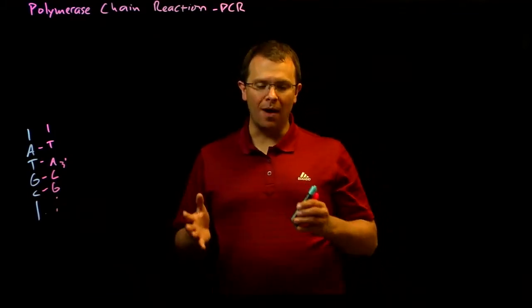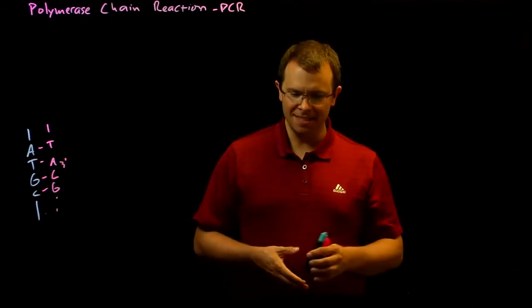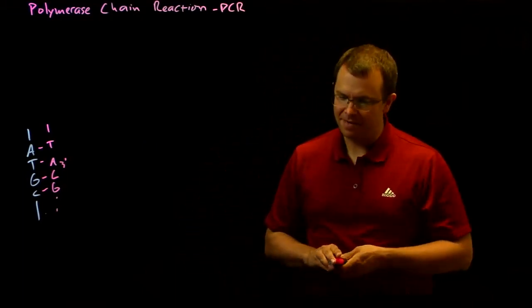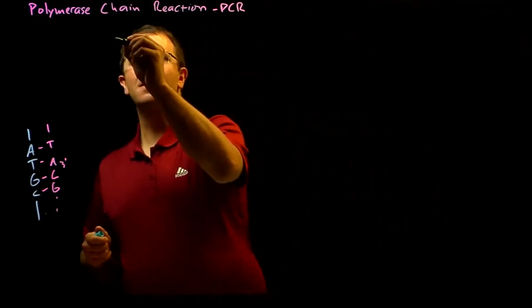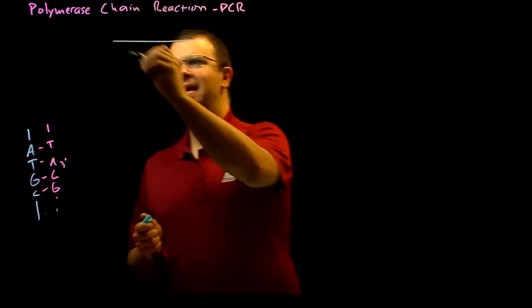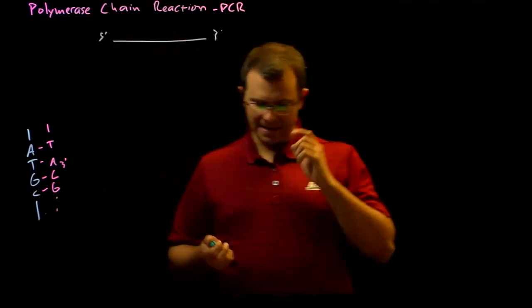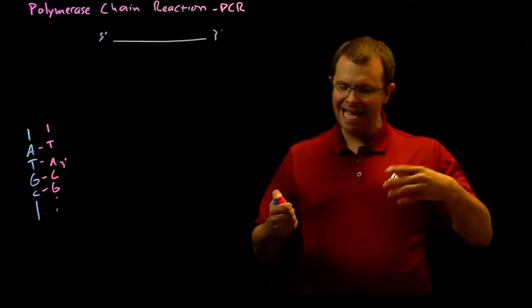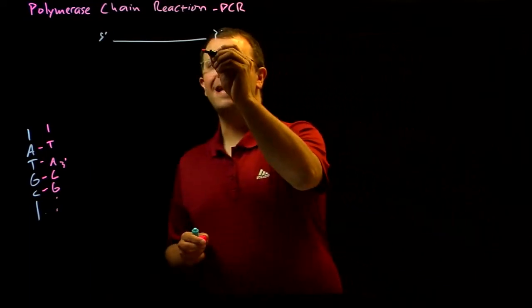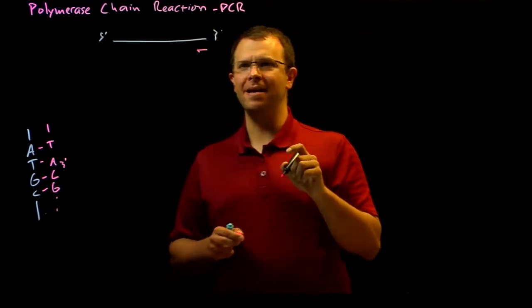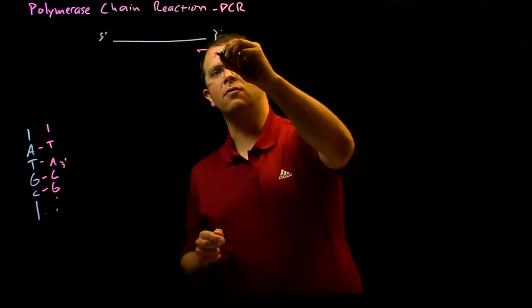And this is why we need to know a little bit about the sequence of the ends of the fragment we want to copy. Because if I start with a single strand of DNA, let's say this is the five prime end and the three prime end, then I chemically synthesize a small DNA molecule that is complementary to this end of the molecule. We'll call this a primer.